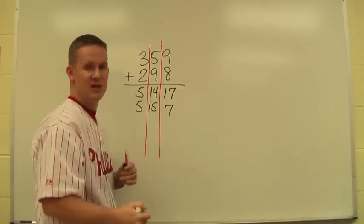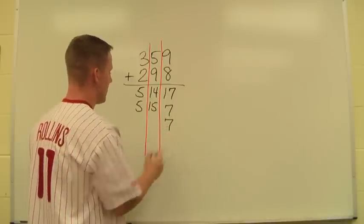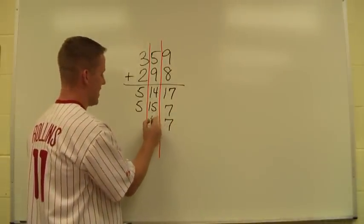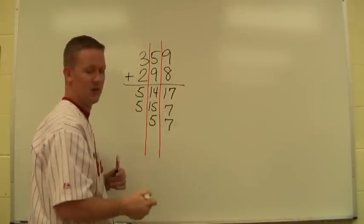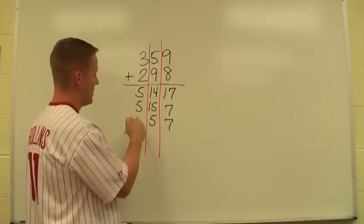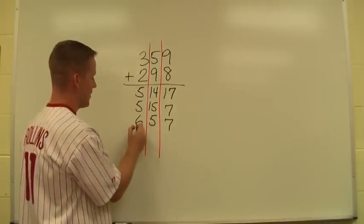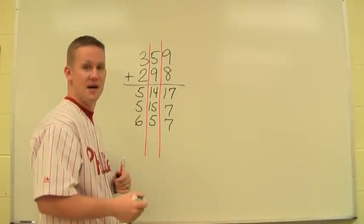I'm not done until I have one number in each column. So I continue, the 7 comes down, the 5 can stay here. The number in the 1's place can always stay. The 1 goes over to the 100's place, the 5 becomes a 6. So the final answer is 657.